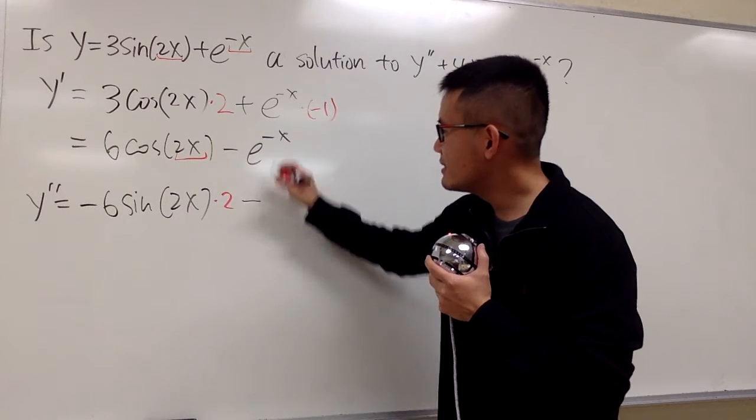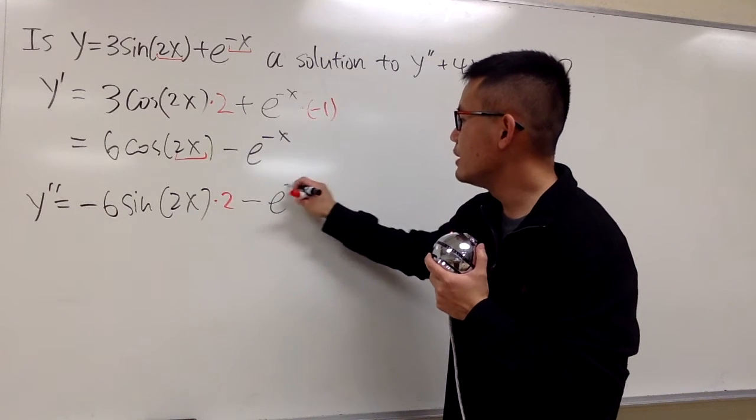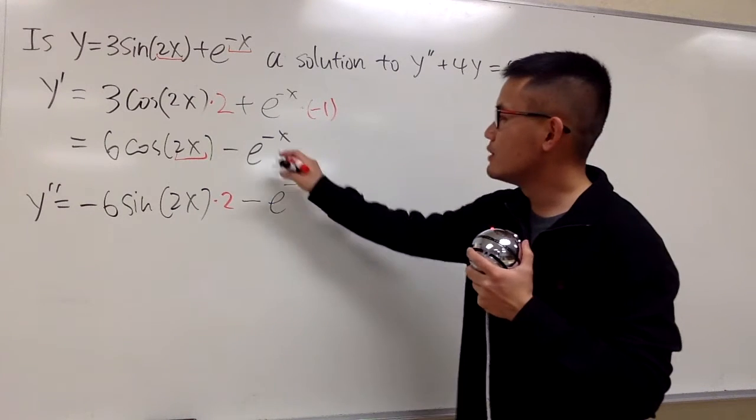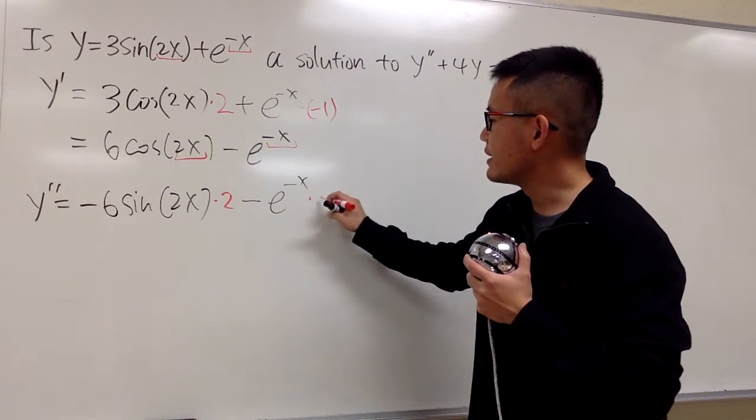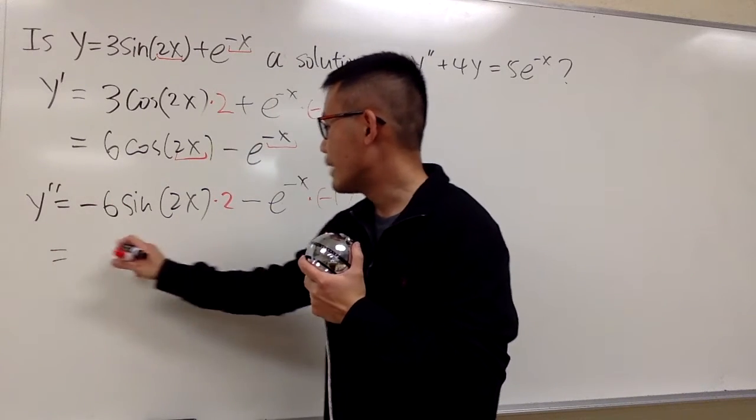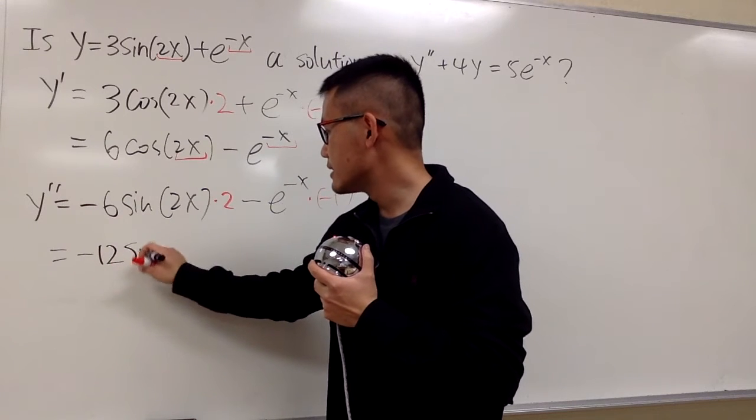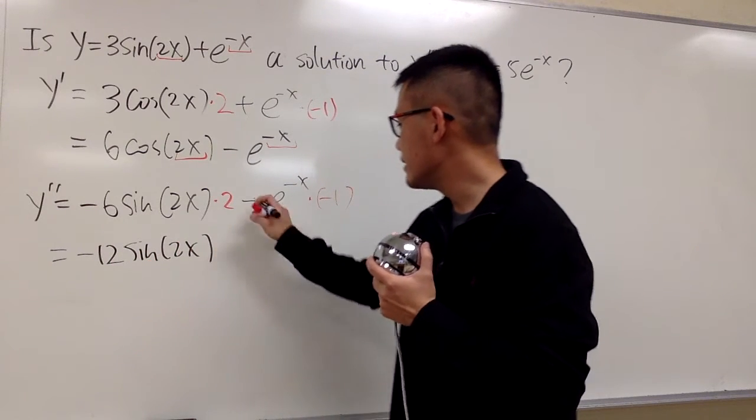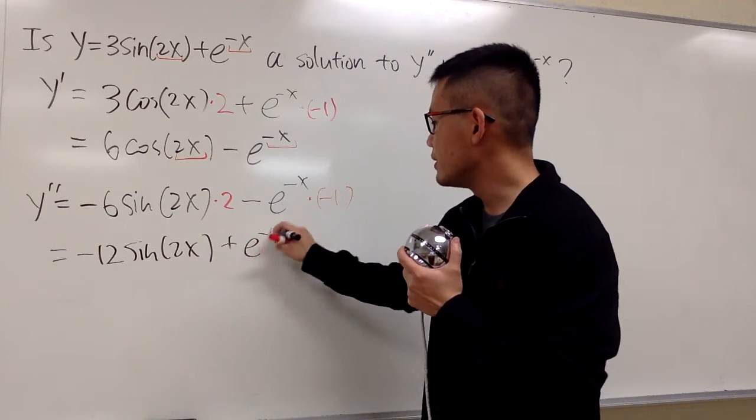And let me bring down minus, and e to the negative x will give you e to the negative x first. Chain rule says multiply by negative 1. All in all, the second derivative is this times that, which is negative 12 sine of 2x. And this times that is plus e to the negative x.